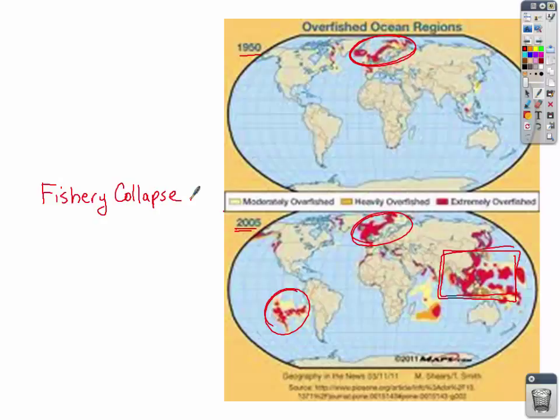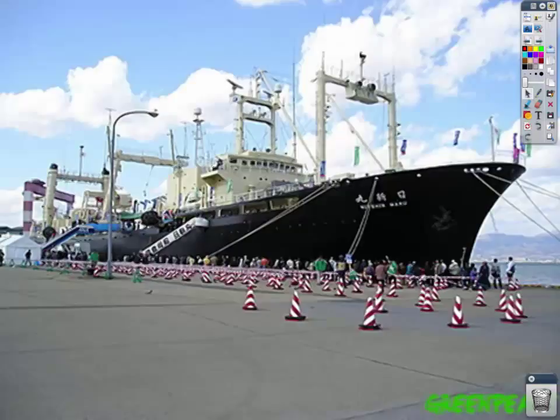We're seeing the tragedy of the commons in our fishing industry. All these countries are going out to the open oceans, overfishing, getting as much as they can as quickly as they can, and we're seeing fishery collapse all around the world. Why is this happening? The technology of the fishing industry has gotten so big.